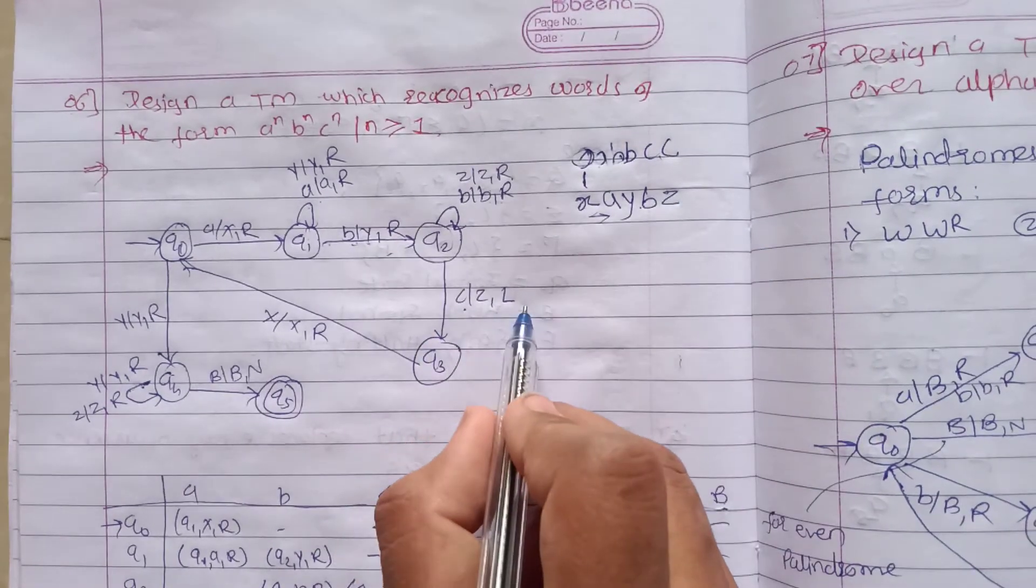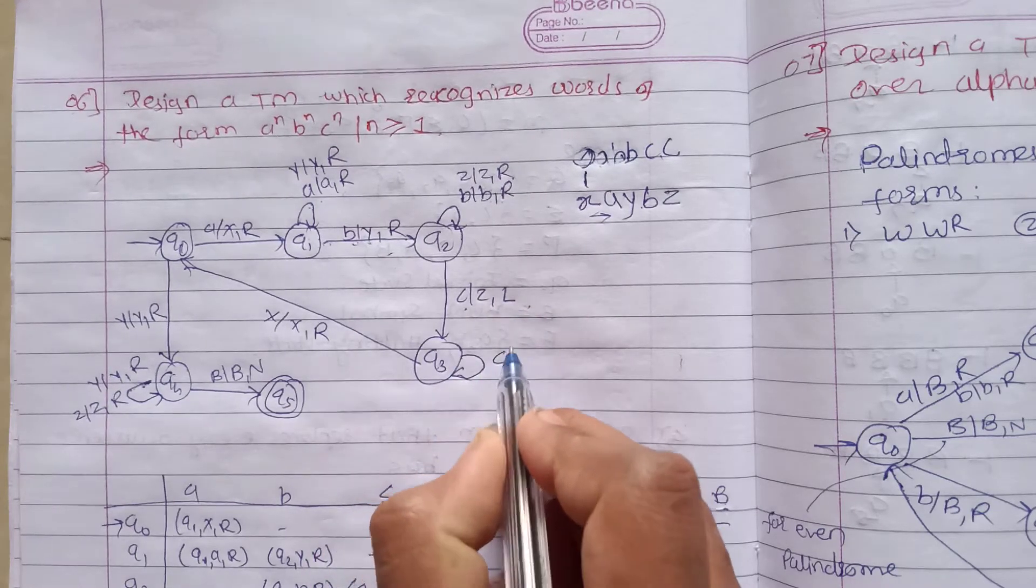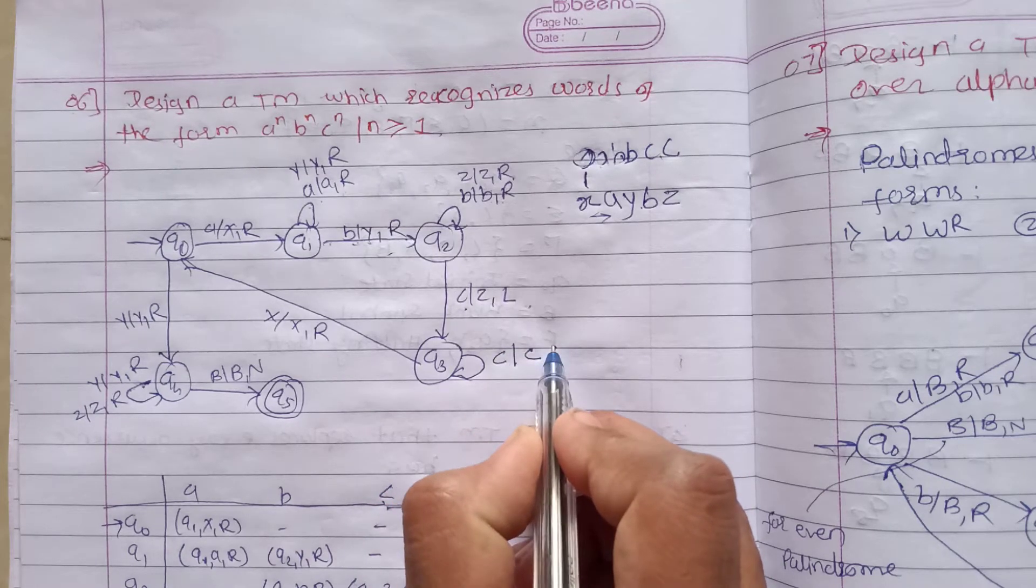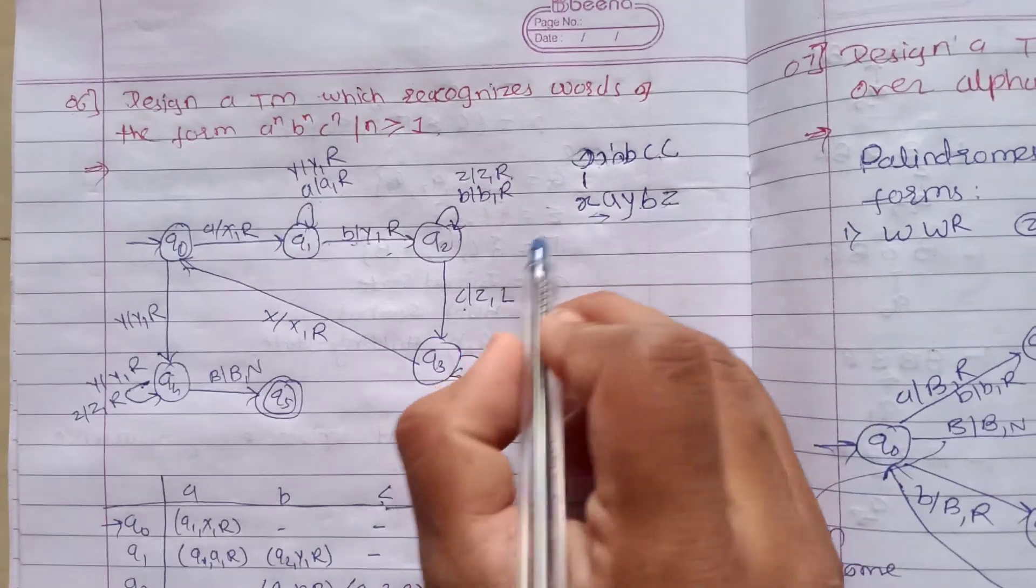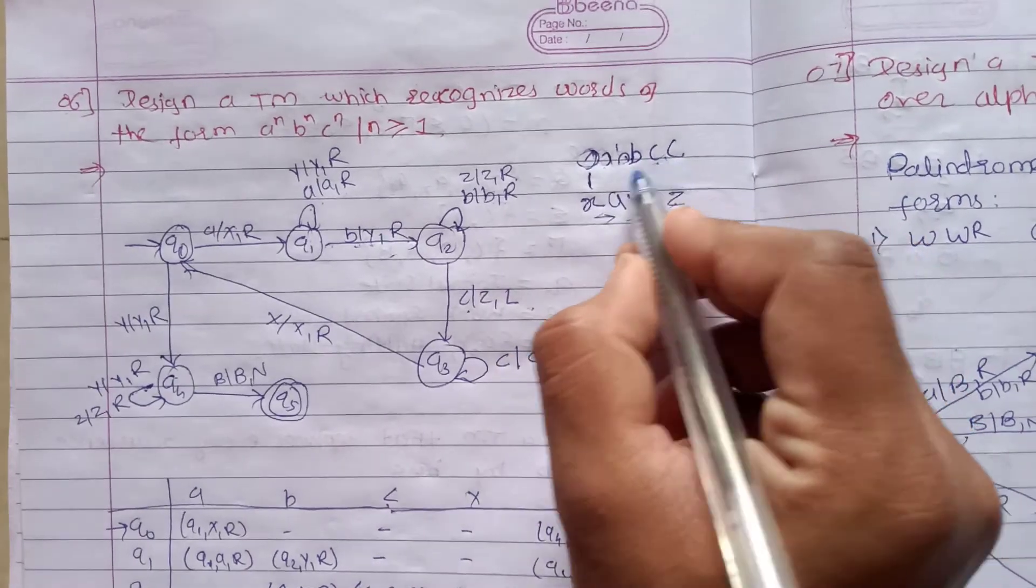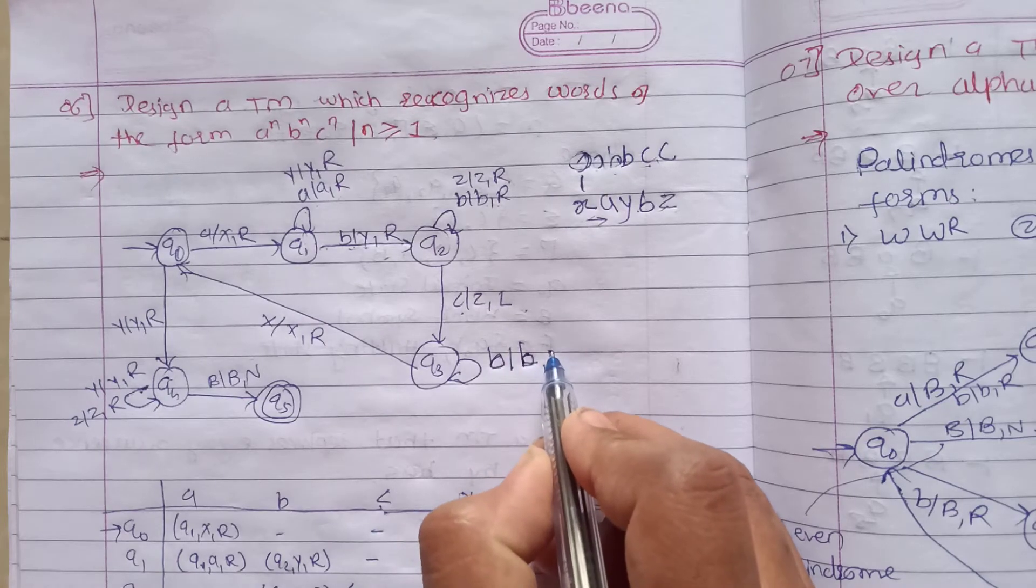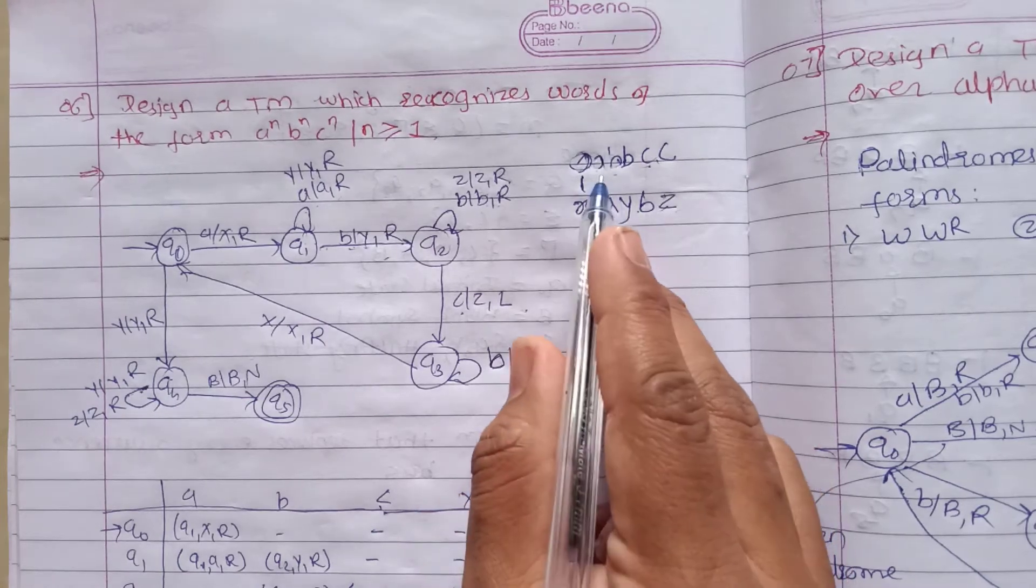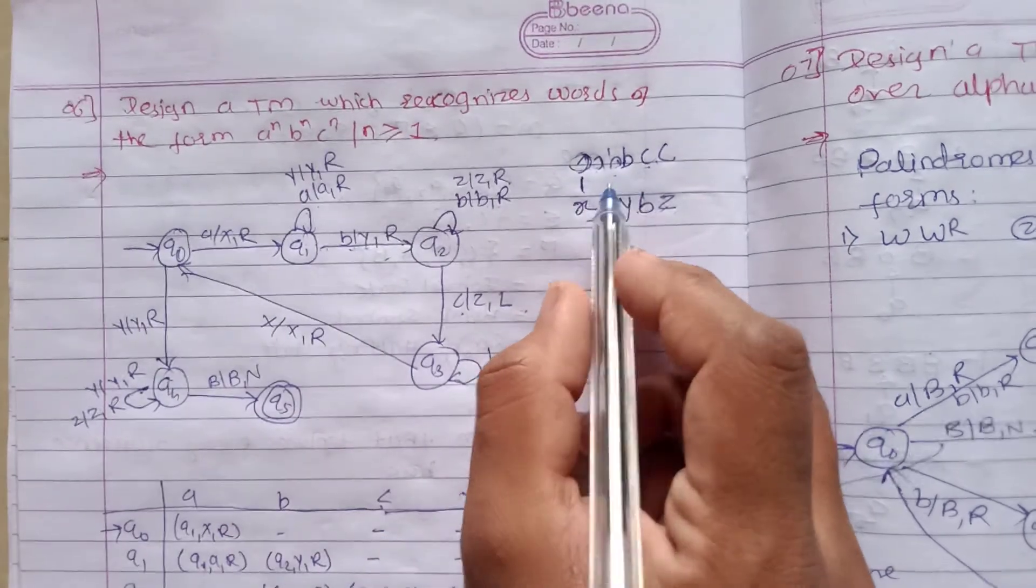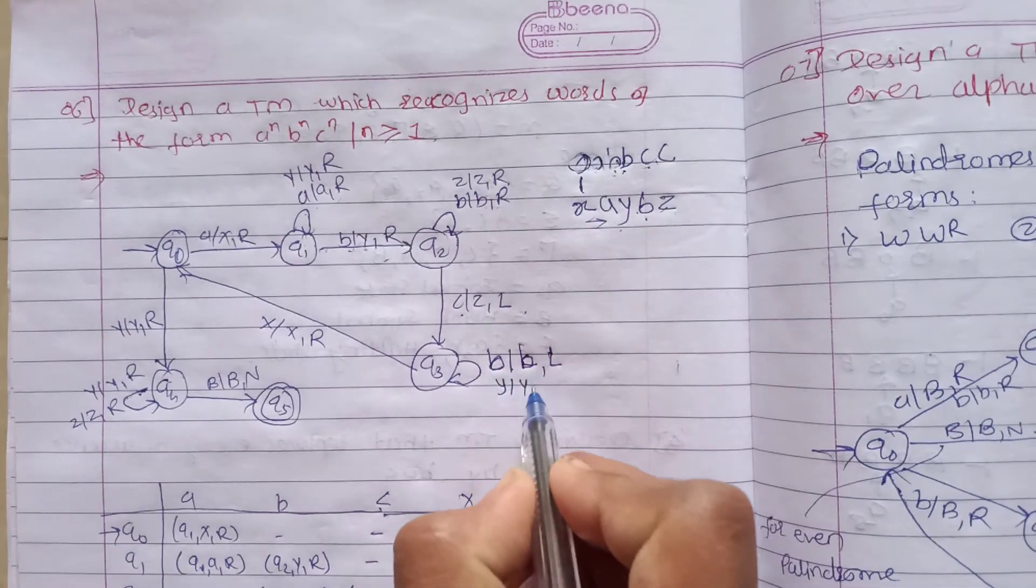After replacement, movement changes. If another c comes, c will remain c and movement is left. Left again - what will we encounter? b. So b will be replaced with b, movement is left. We need to go back to x, so we move left again. We get y, so y will be replaced with y, movement left.